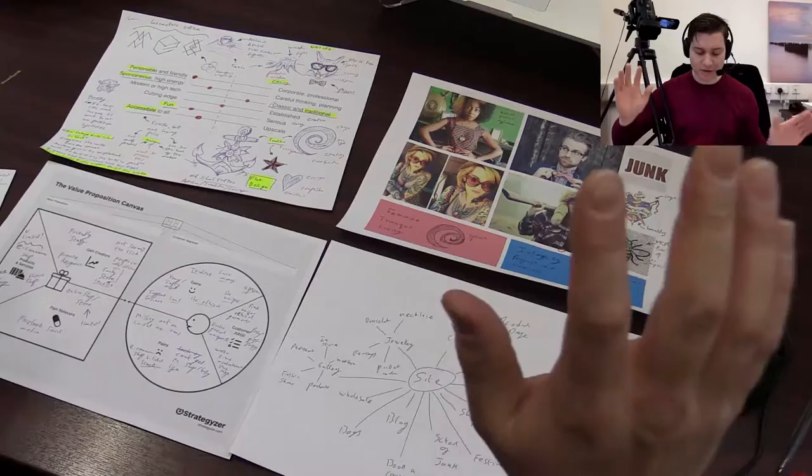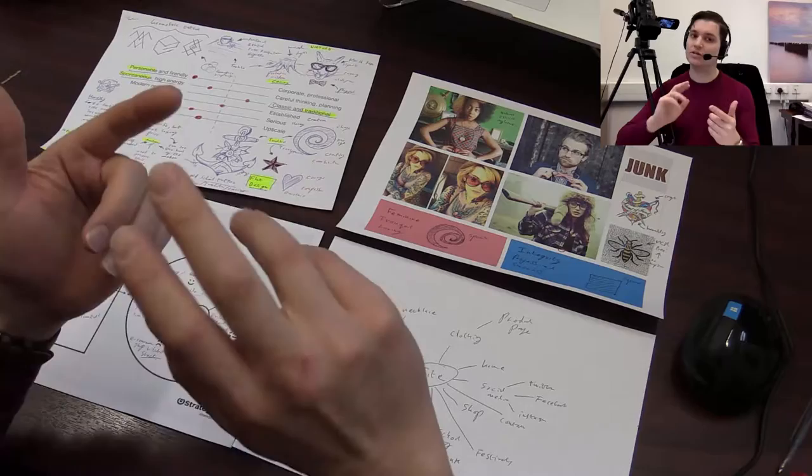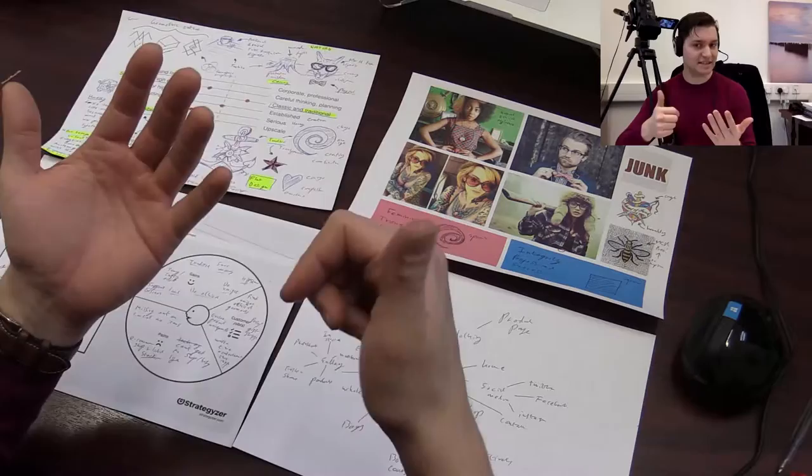So let's begin with the design thinking process. As we've covered in lectures, it's a six-part step. We're going to focus on the first four. So you've got understanding, you've got observation, you've got point of view, you've got ideation, then prototype and testing. So that's six points.